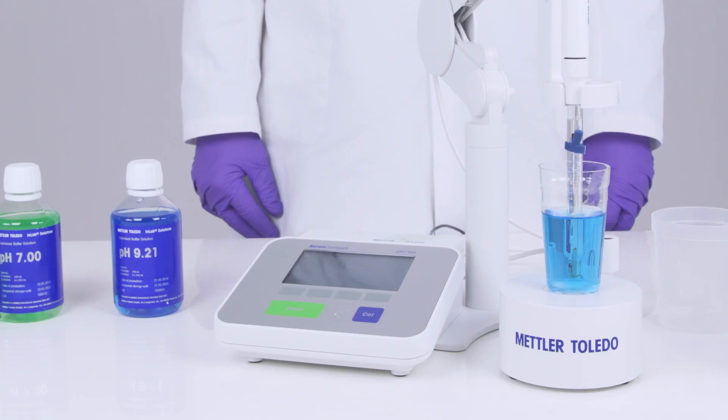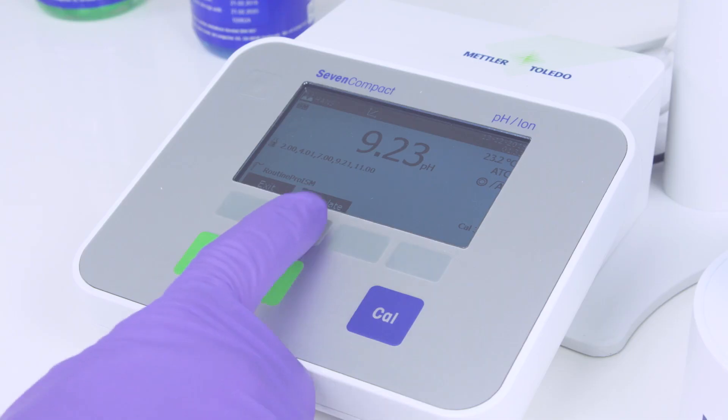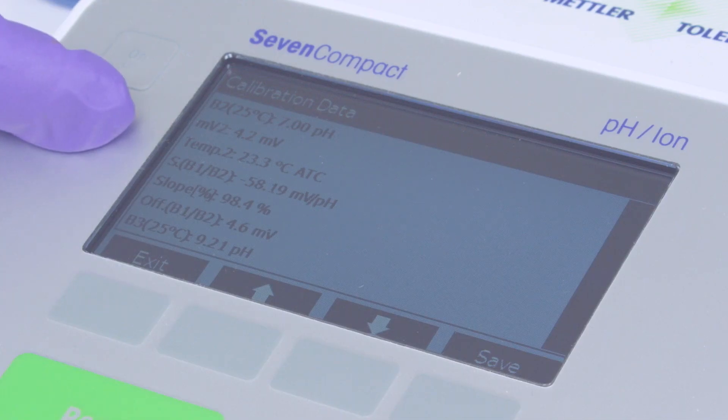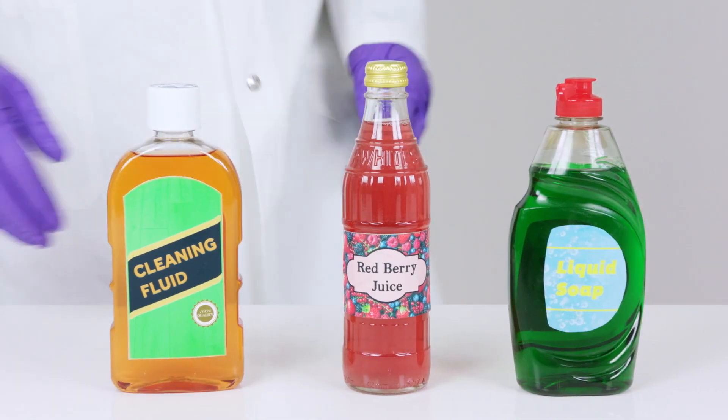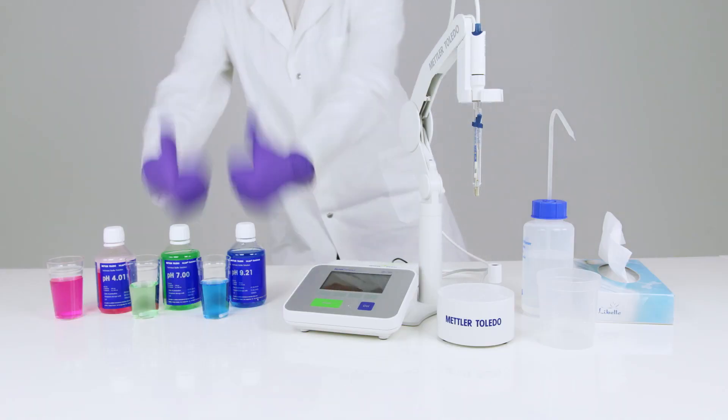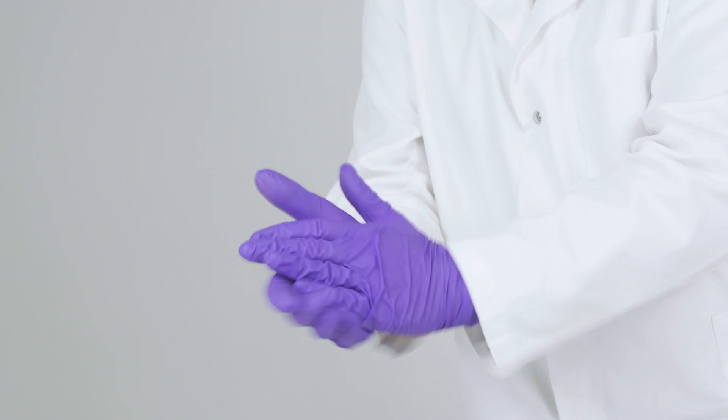When the last buffer has been measured, you can press Cal calculate to see the new sensor values which you've measured, including the slope and offset values. These can be saved by pressing save. Congratulations, you've now completed your very own calibration. Now you can get to work measuring your samples. Well done Hans, give them a clap. Thanks for watching.